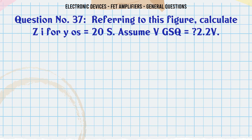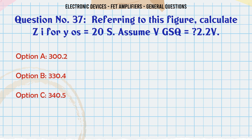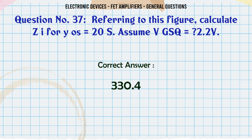Referring to this figure, calculate ZI for YOS = 20µS, assuming VGSQ = 2.2V. A. 300.2Ω. B. 330.4Ω. C. 340.5Ω. D. 350.0Ω. The correct answer is 330.4Ω.